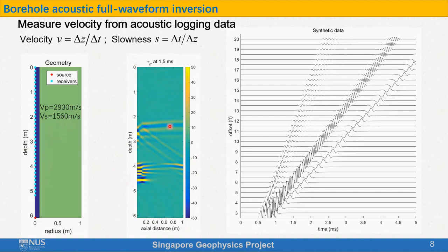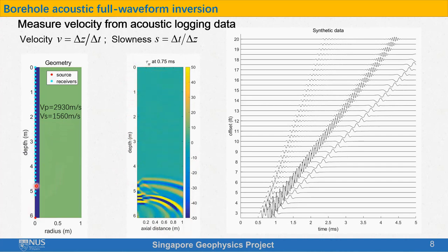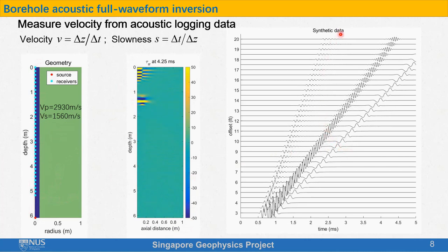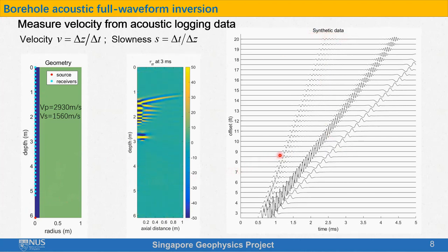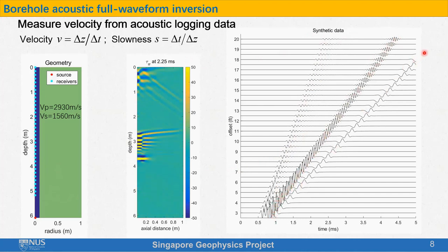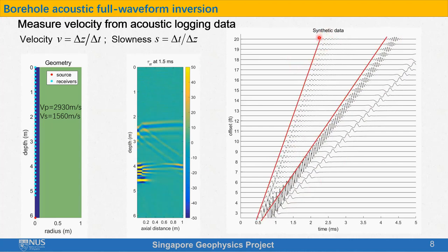The fastest wave is P-wave, this is S-wave, followed by pseudoRayleigh waves, and this is Stoneley waves. When these waves travel to the position of the receivers, they are recorded as synthetic data. The data is called synthetic data because they are not real data — they come from the numerical simulations. This is the recorded P-wave, this is recorded S-wave and pseudoRayleigh waves, and this is recorded Stoneley waves.